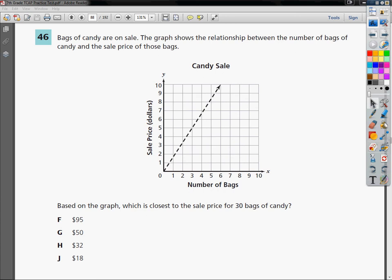Bags of candy are on sale. The graph shows the relationship between the number of bags of candy, which they list down here in the X axis, and the sale price of those bags. So the sale price would be here.